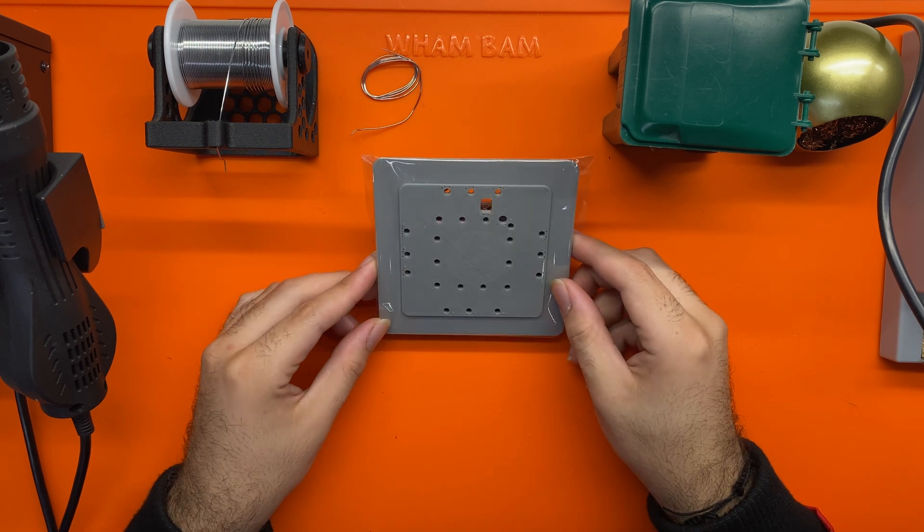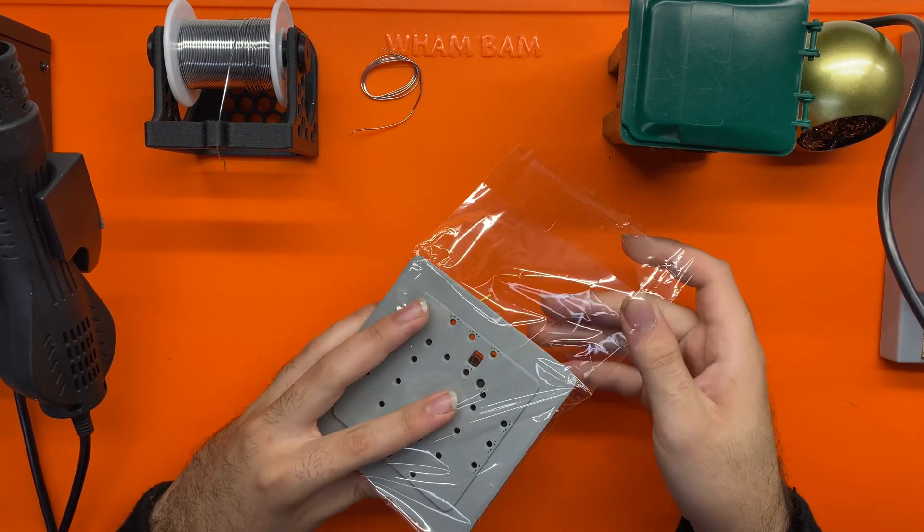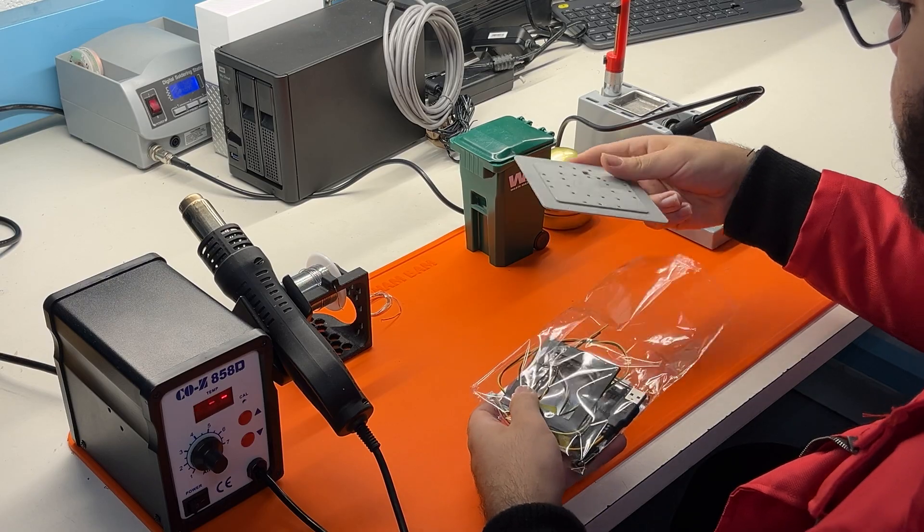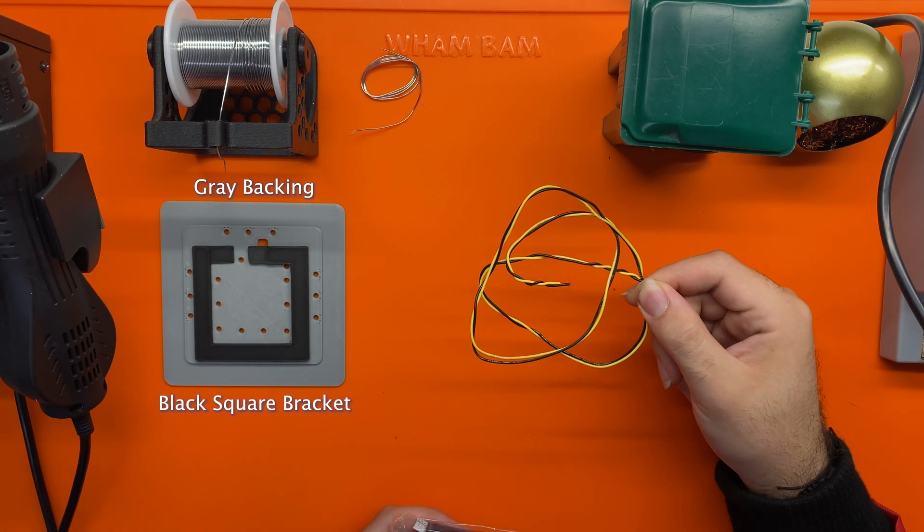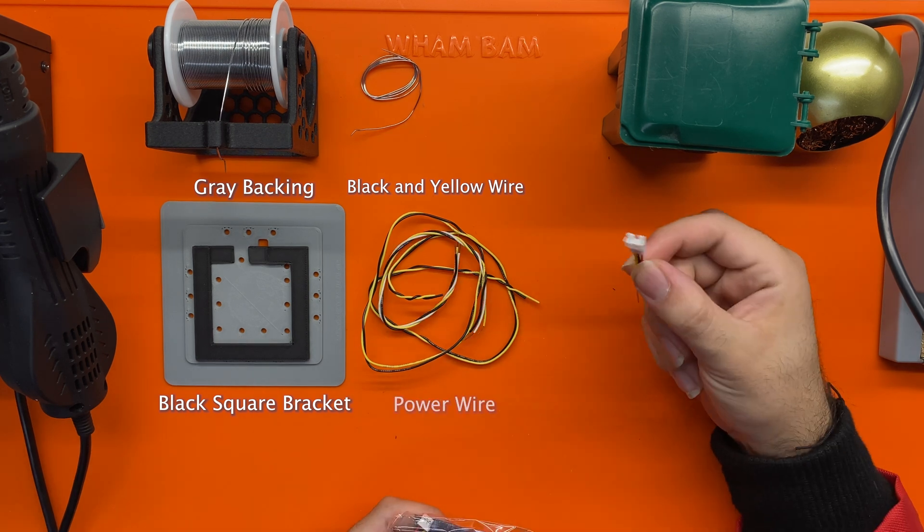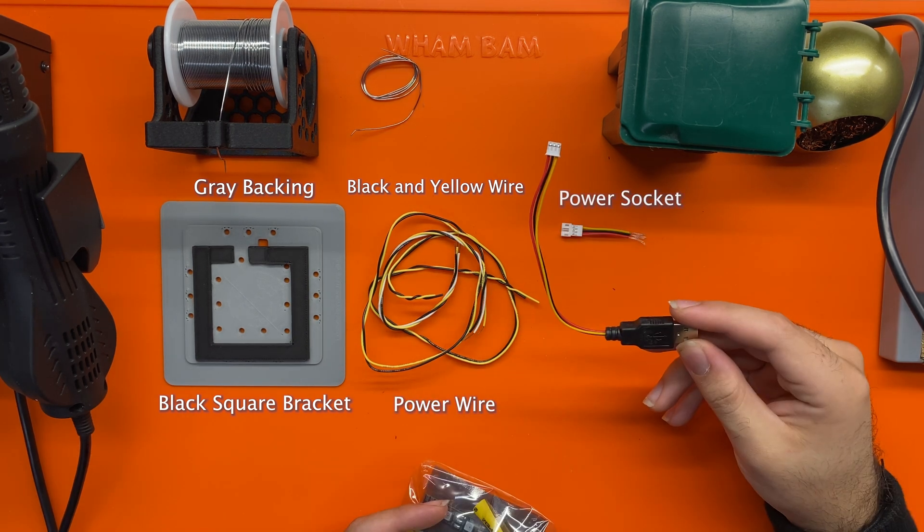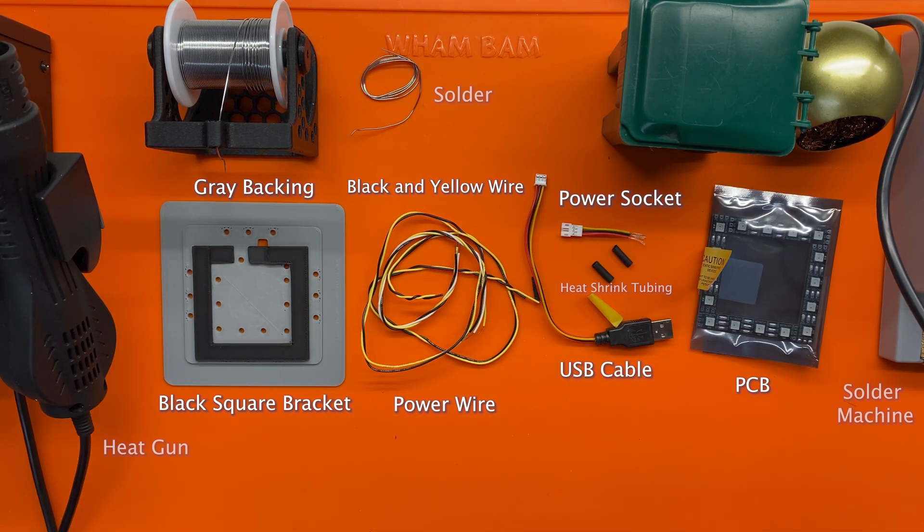First, I'm going to take all of the contents out of the package. First thing we have here is our gray backing, our black square bracket, our black and yellow wire for threading, our power wire, the power socket, the USB cable, the PCB, and our heat shrink tubing. So these are all the components that you need to make your kit.